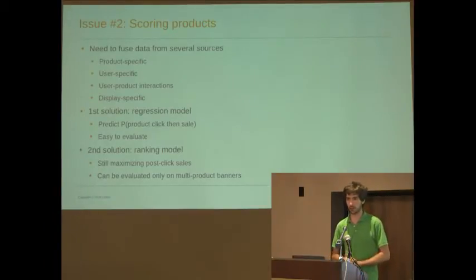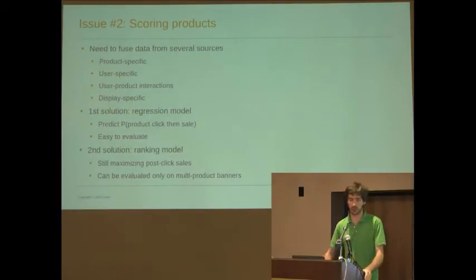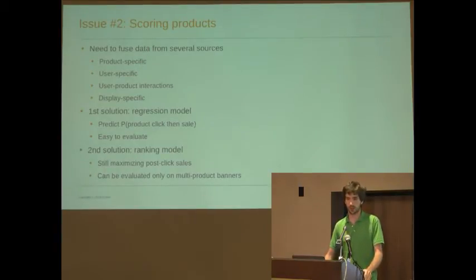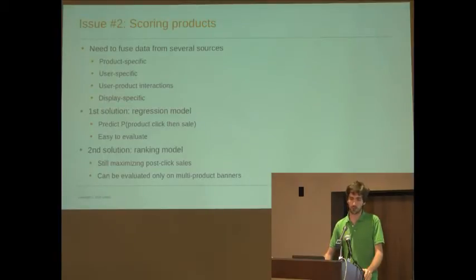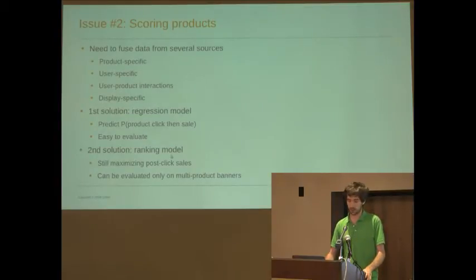We still try to optimize post-click sales, but when there are several products in the banner, you try to order the products so that the clicked product is the one you predicted was going to be clicked. Ideally it's the first one, but you have to account for potential biases in the banner design. Some banners may lead more naturally to the user clicking on the second item — and that was one of the difficulties in implementing the ranking model.